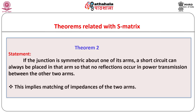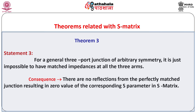Statement 2 implies matching of impedances of the two arms. Lastly, statement number 3: for a general three port junction of arbitrary symmetry it is just impossible to have matched impedances at all three arms. As a consequence of these theorems one should note that there are no reflections from the perfectly matched junction, resulting in zero values of corresponding S parameters in the S matrix. It is very interesting to go through the mathematical proof of this statement based on the principle of contradiction.